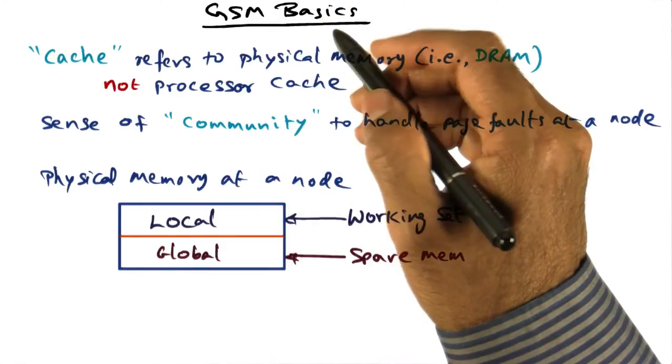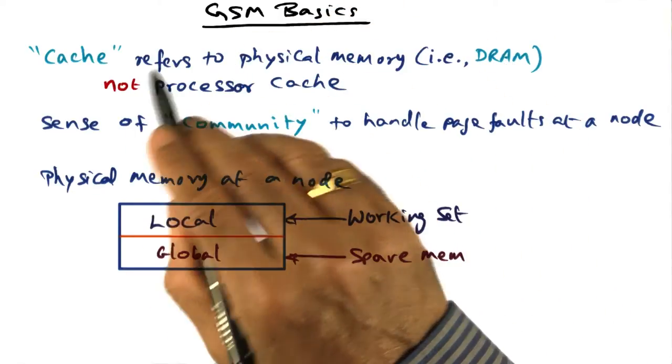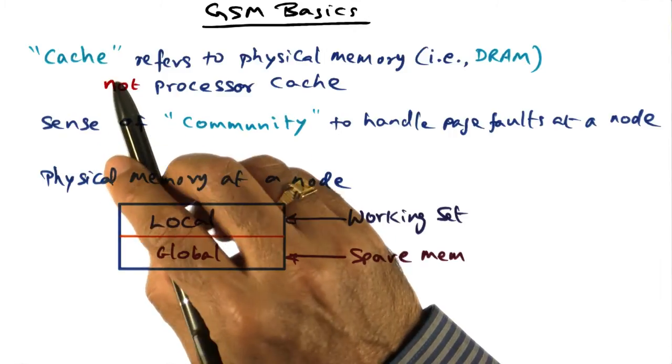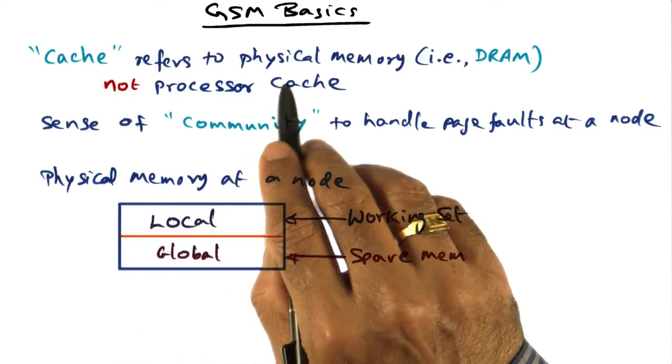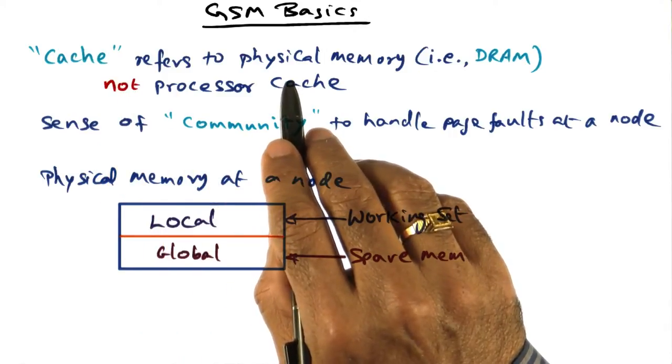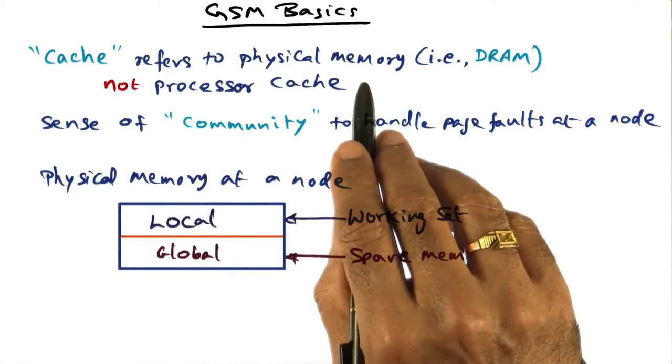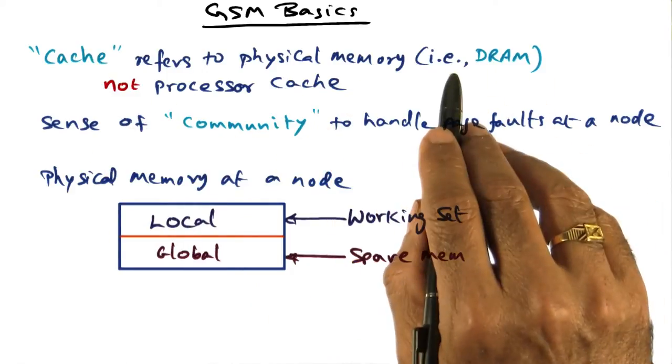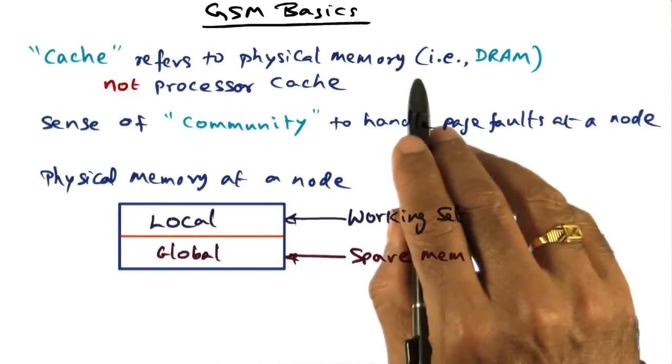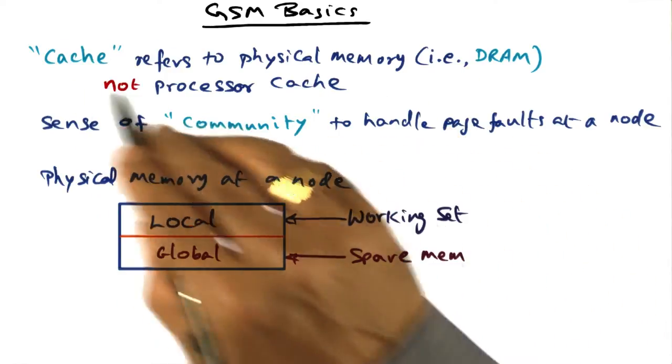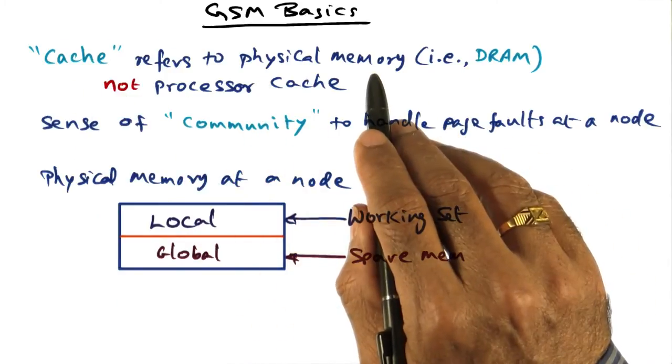So let's introduce some basic terminologies. In GSM, when we talk about cache, what we mean is physical memory. We're not talking about the processor caches. We're talking about physical memory, that is the dynamic random access memory, or DRAM for short. That's what we mean when we use the term cache.